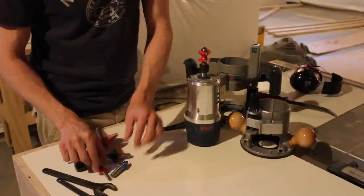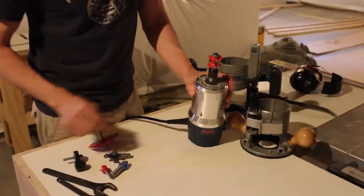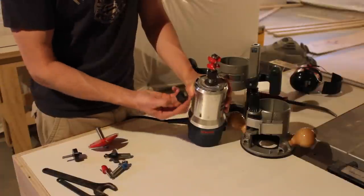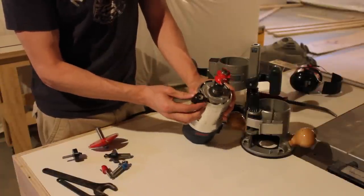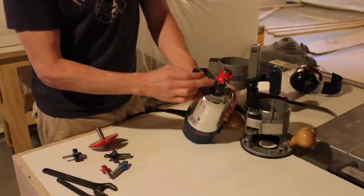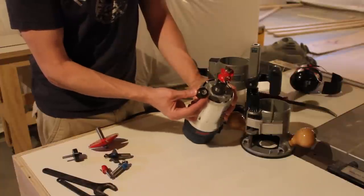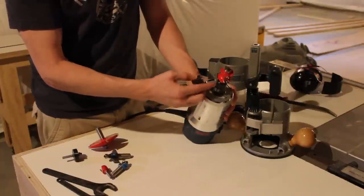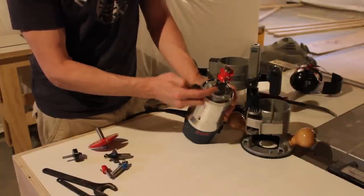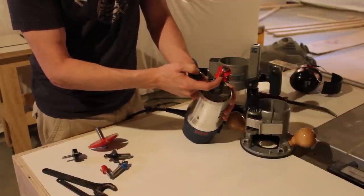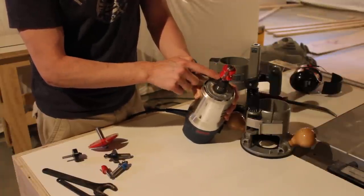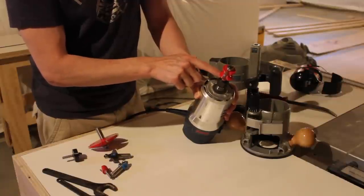Most routers when you buy them will come with a collet, which is a nut that locks into the top of the router that accepts either half inch shafts or quarter inch shafts. This collet is removable. So this particular bit is a windowsill cutting bit, it puts a windowsill profile on, and this is a half inch diameter router bit in a half inch collet.